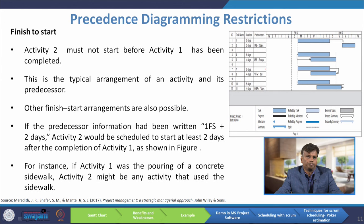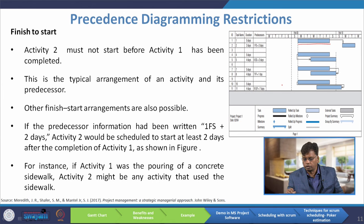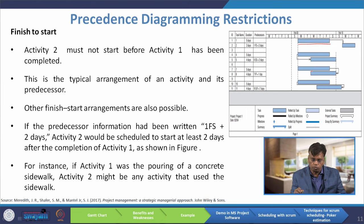The first precedence diagram restriction is finish-to-start. Activity one has five days — Monday through Friday — and after finishing it, activity two will start. For example, finish-to-start plus two days means that after finishing activity one, two days later — Saturday and Sunday — the second activity will start. The arrow in the Gantt chart starts from finish and ends at start, meaning activity two must not start before activity one has been completed.